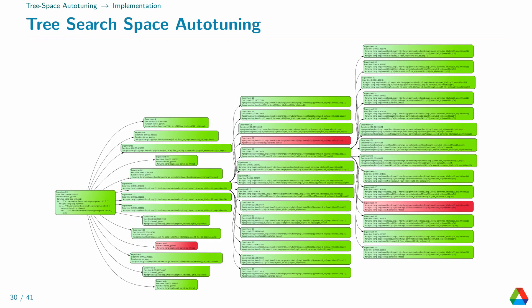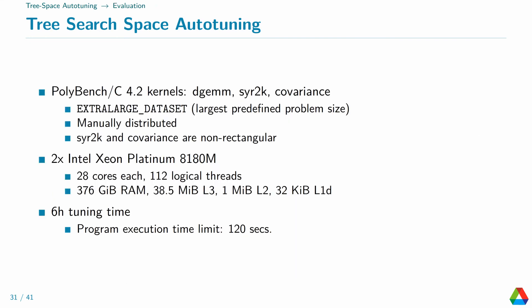This is how the search tree looks like in practice after expansion of three configurations and evaluation of all the children. A red node means that the evaluation has failed. Either Polly's dependency analysis rejected the optimization as not semantics-preserving, or the execution timed out after 120 seconds. To test out the autotuner, we applied it to three Polybench benchmarks: DGEMM, SUR2K, and covariance. The test machine was a workstation with 112 logical threads. This is intentional and will be relevant later. We let it run for six hours and looked at the result.